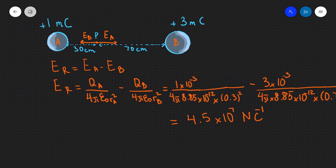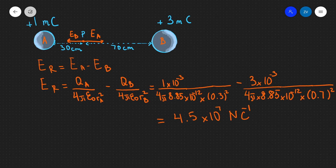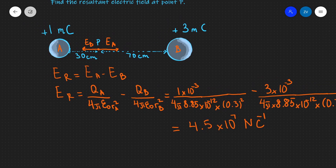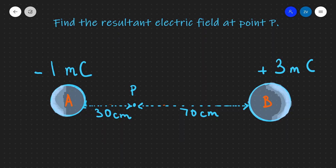So this is our resultant electric field strength at point P. For our second example, all I've done is change the sign of charge A — so this is now a negative charge. Let's see whether we can now calculate the electric field strength at point P.